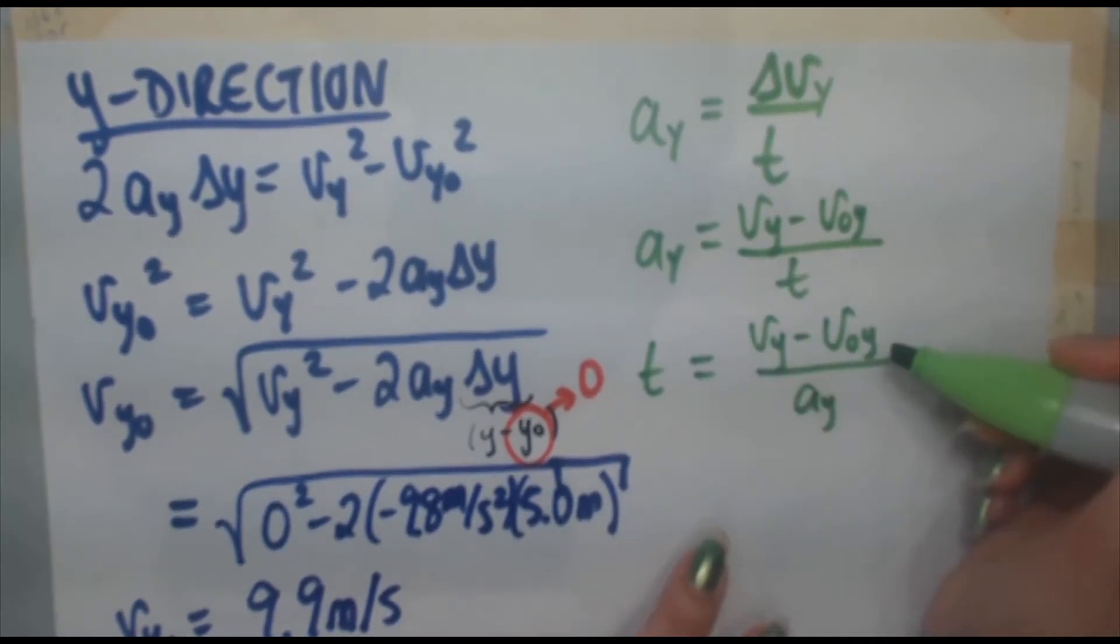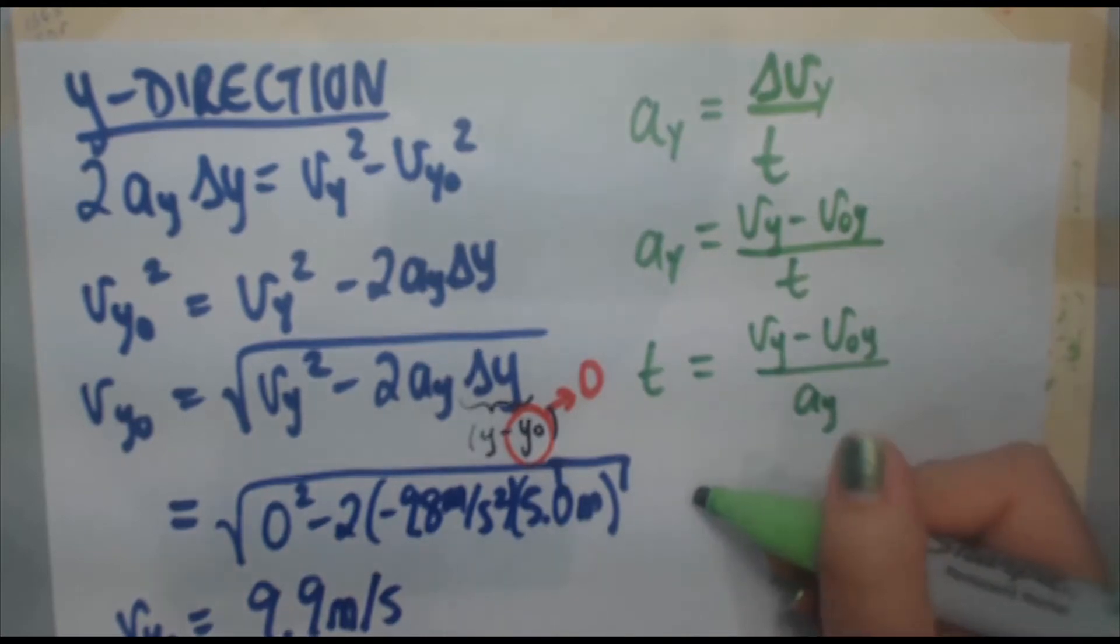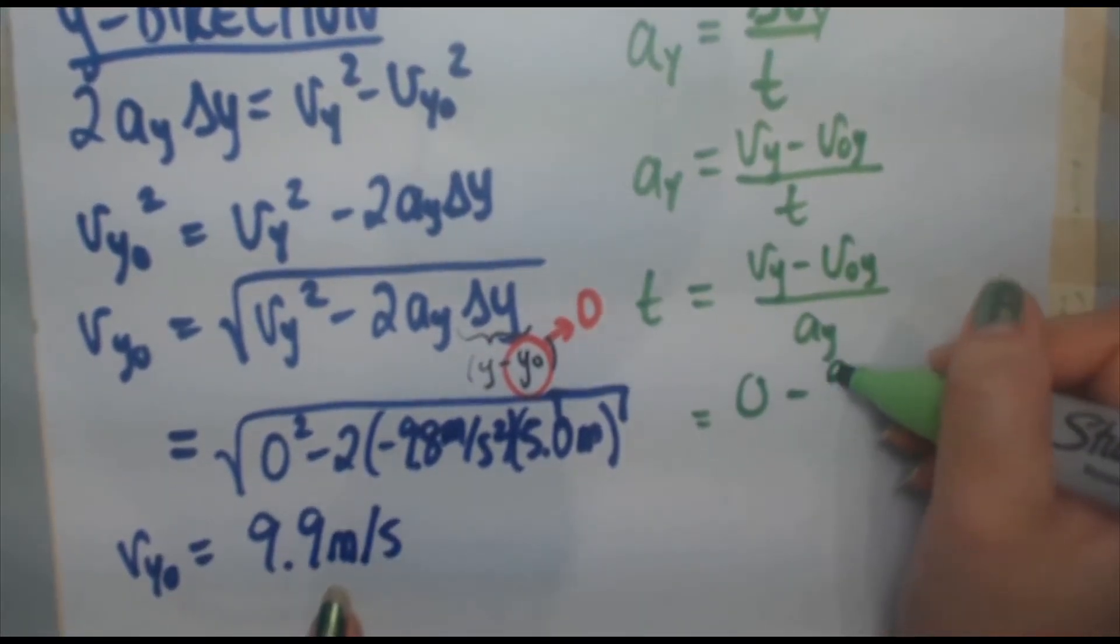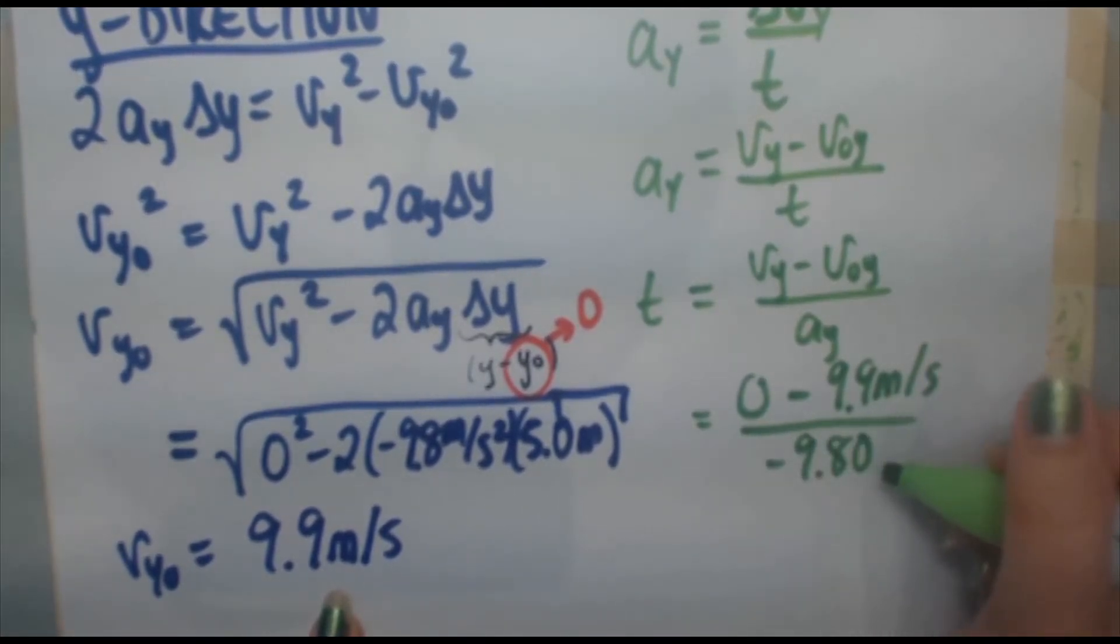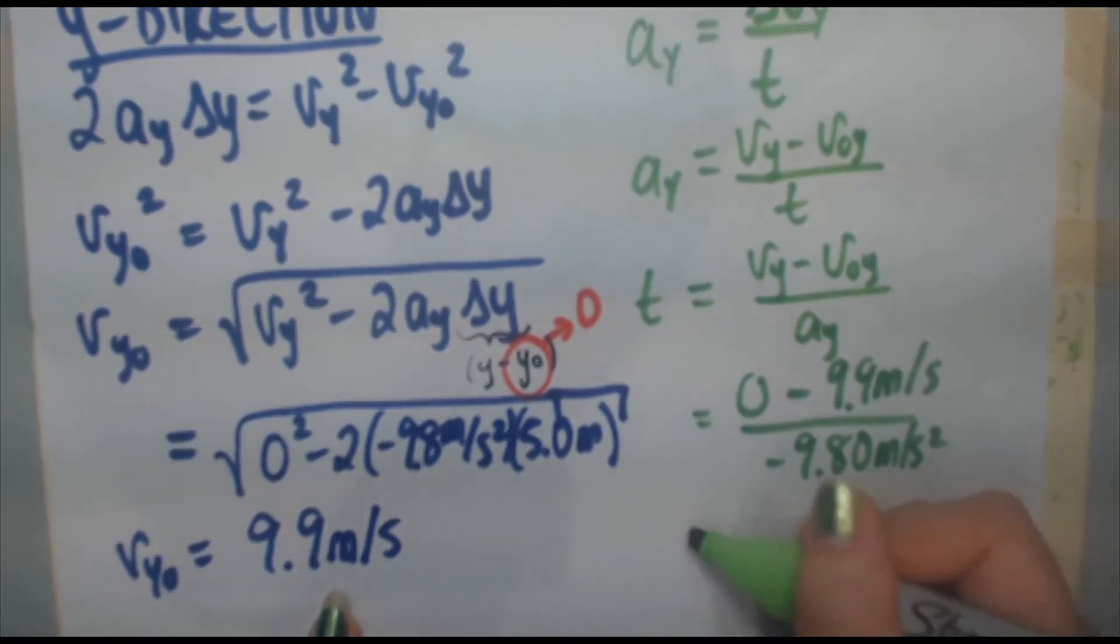vy is zero. v₀y, we just determined, it's 9.9 meters per second. And acceleration in the y direction is negative 9.80 meters per second squared. When you plug that into your calculator, you're going to get the time to be 1.01 seconds. You take this number, you plug back into formula for vx.